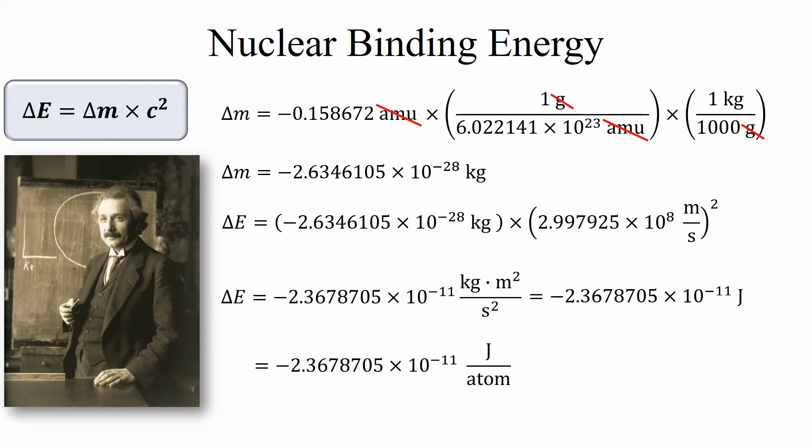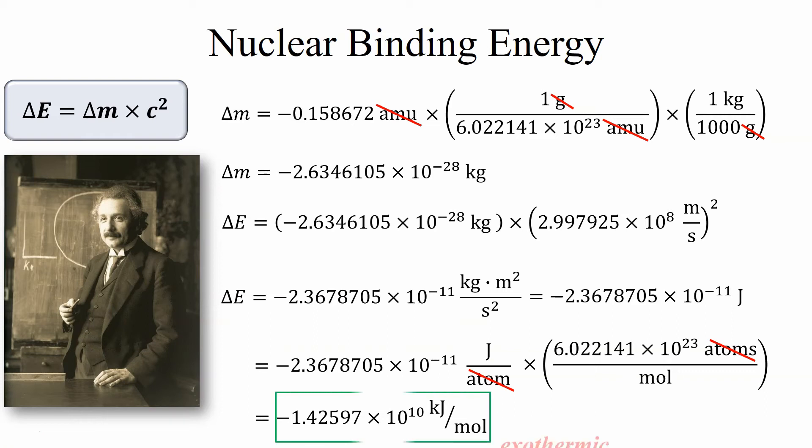Now we want to know how much energy we get out from a whole mole of fluorine-19 atoms. We just multiply this times Avogadro's number and now we start getting into some serious energy. This is about 14 terajoules per mole and again this is negative so this is exothermic. So we're talking about some pretty serious energy here.